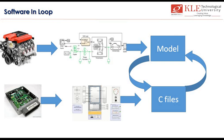Next we have Software In-Loop. Here, I have a plant model again — the engine is my plant model — so I am going to model that in the simulation software. I also model the controller in Simulink or any other simulation software, and then I generate a C file out of it and put them together in a loop. That becomes my Software In-Loop. The engine behavior is fully modeled, and the generated C file is put in loop with the engine model — this becomes my Software In-Loop.